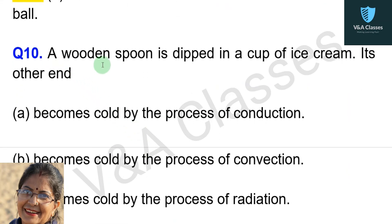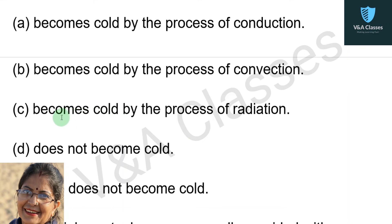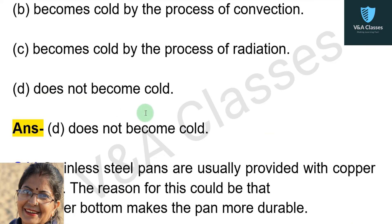Question number ten: a wooden spoon is dipped in a cup of ice cream. Its other end — option 1: becomes cold by conduction; option 2: becomes cold by convection; option 3: becomes cold by radiation; option 4: does not become cold. Answer: does not become cold.